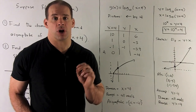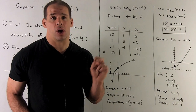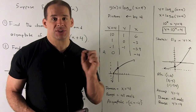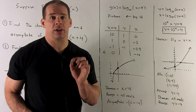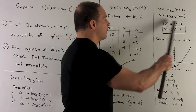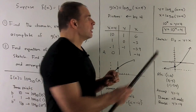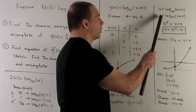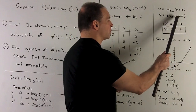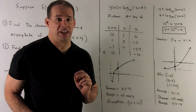Next, g inverse. First, let's get the equation. We take our g of x, call it y, write our equation, switch x and y, and solve for y — that's how you get an inverse function. I want to put this logarithmic equation into exponential form. The base is 10, the exponent is x, so it's 10 to the x equal to whatever's in the parentheses, which is y + 4. Pushing the 4 to the other side gives us our equation for g inverse: g⁻¹(x) = 10^x − 4.